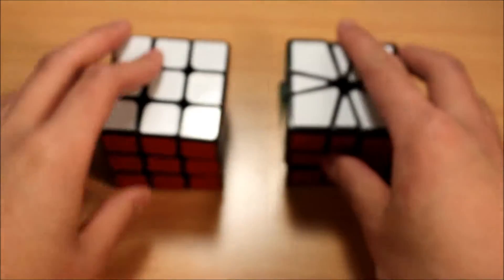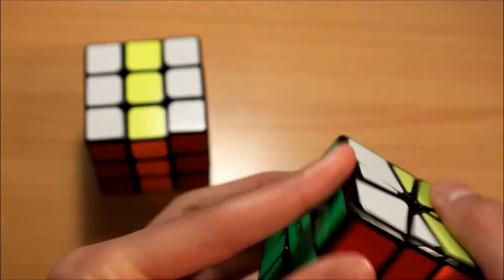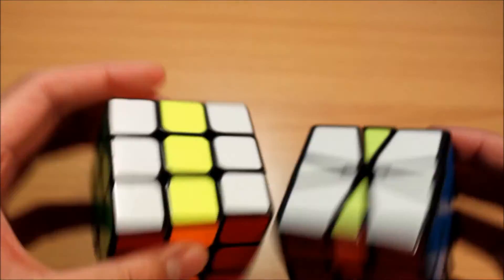The reason it's called M2 is because if you do M2 on 3x3, you can see it's pretty similar.